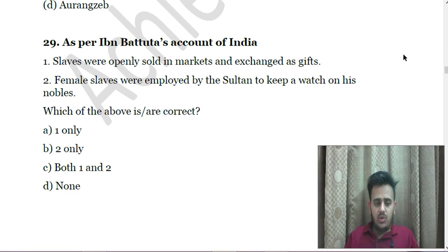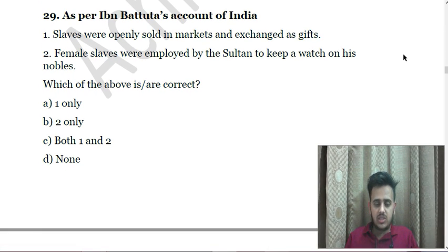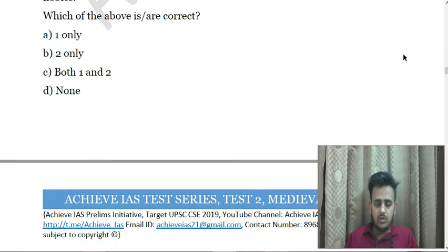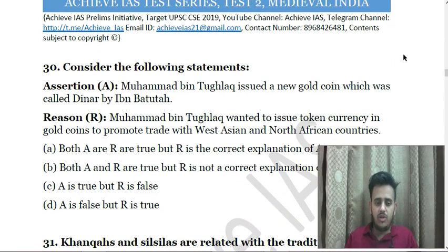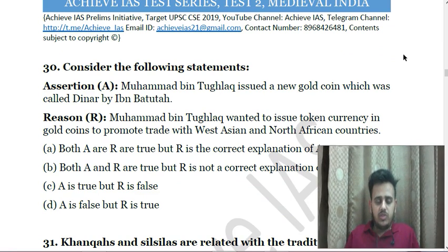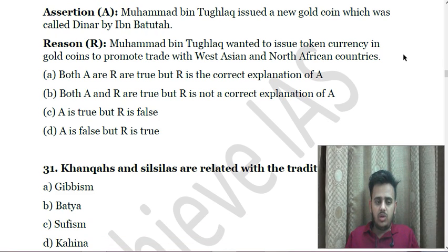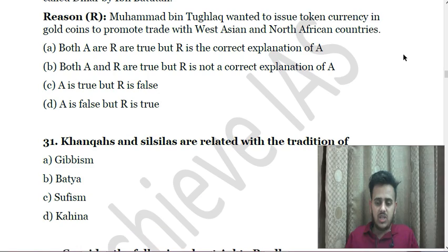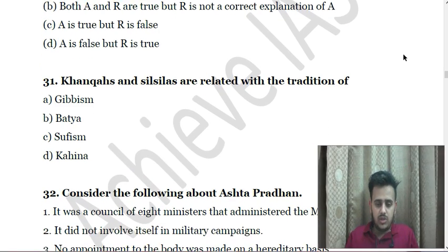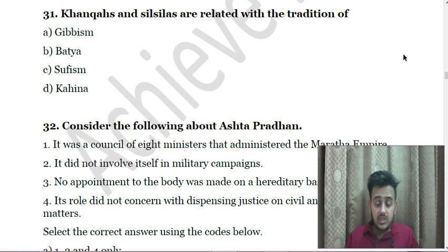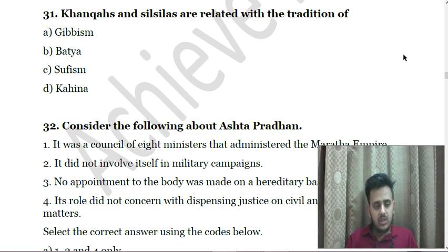Next: As per Ibn Battuta's account of India — First, slaves were openly sold in markets and exchanged as gifts; Second, female slaves were employed by the Sultan to keep watch on his nobles. Next: Consider the following — A. Muhammad bin Tughlaq issued a new gold coin called Dinar by Ibn Battuta. R. Muhammad bin Tughlaq wanted to issue token currency in gold coins to promote trade with West Asian and North African countries. Next: Khanqahs and Silsilas are related to the tradition of — A. Jainism, B. Bahai, C. Sufism, D. Kabbalah.